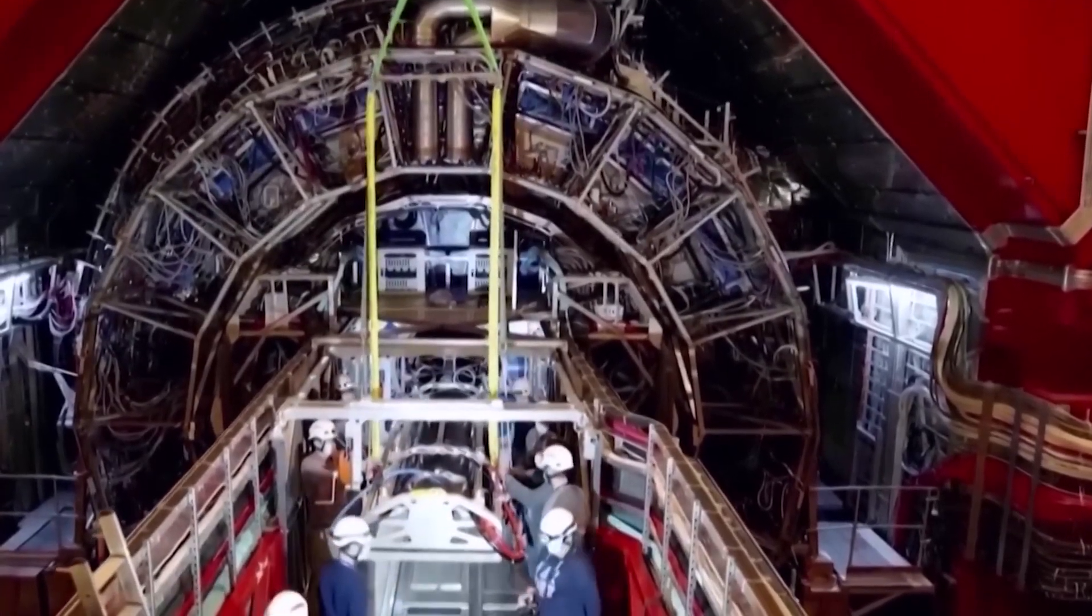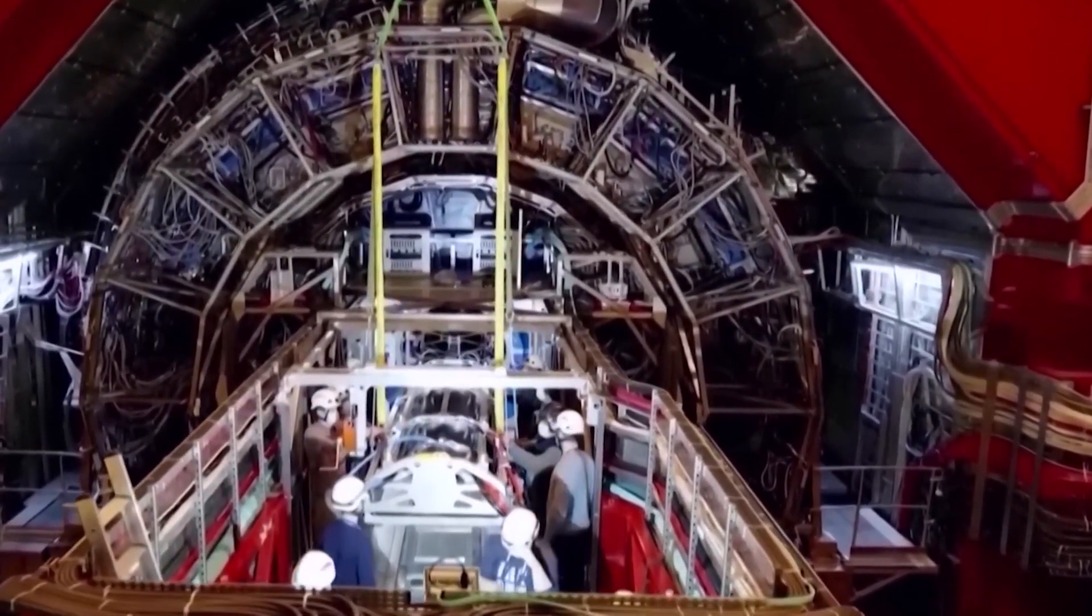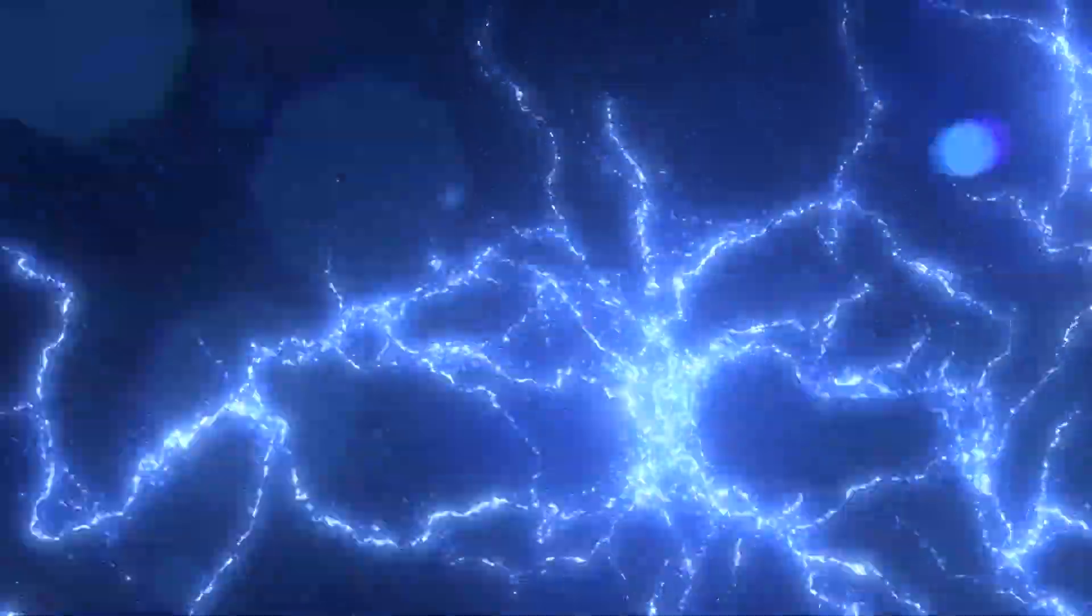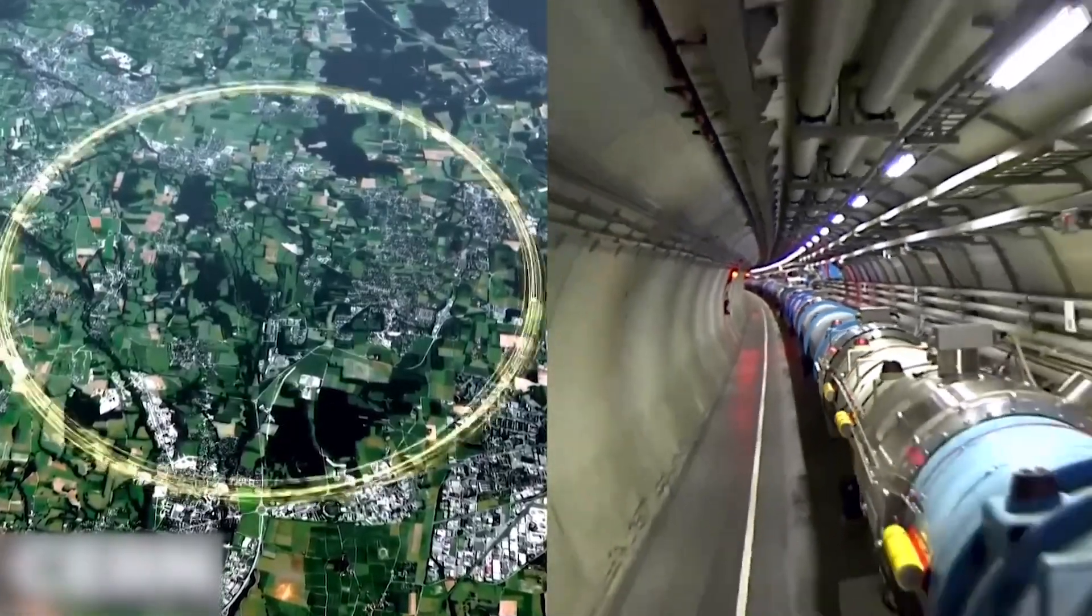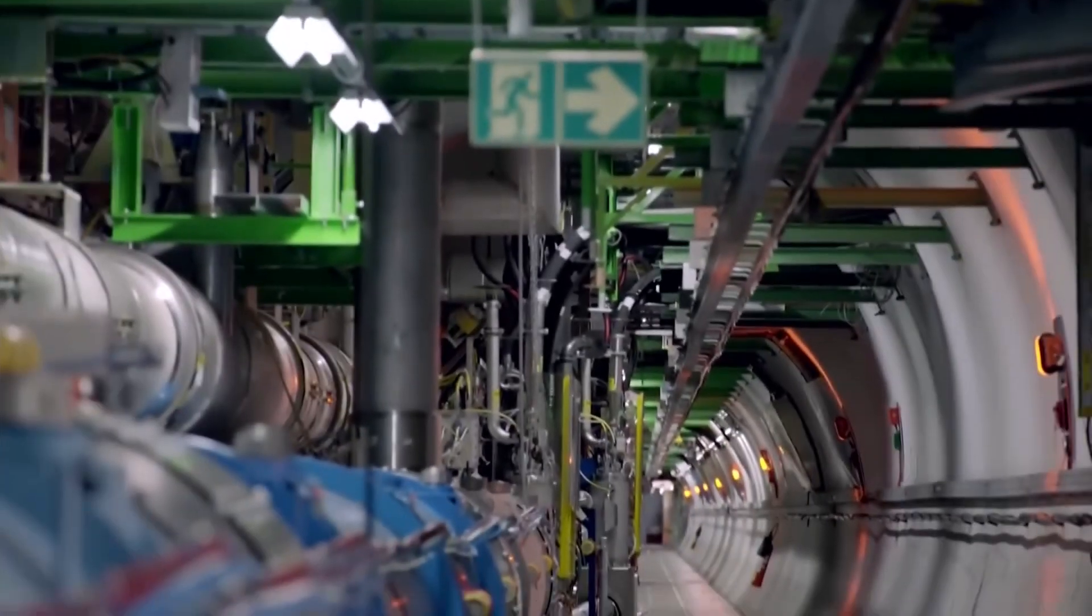Electromagnets in the Large Hadron Collider are formed from coils of special electric cables in a superconducting condition. This ensures that they conduct electricity with minimal resistance. To achieve this, the LHC cools the magnets to minus 271.3 degrees Celsius, which is colder than outer space.